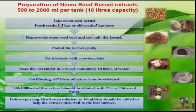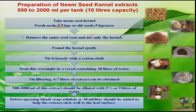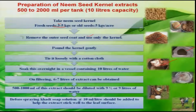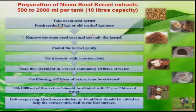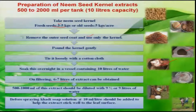Remove the outer seed coat and use only the kernels. Next, pound the kernel gently, then tie it loosely with a cotton cloth, and soak it overnight in a vessel containing about 10 liters of water. After filtering, leave it for 24 hours. On filtering, you will get about 6 to 7 liters of extract. This extract can be diluted in 90 to 100 liters of water for management of insect pests. It is advised to mix with crude soap solution at the rate of 10 ml per liter of water to enhance spreading property.